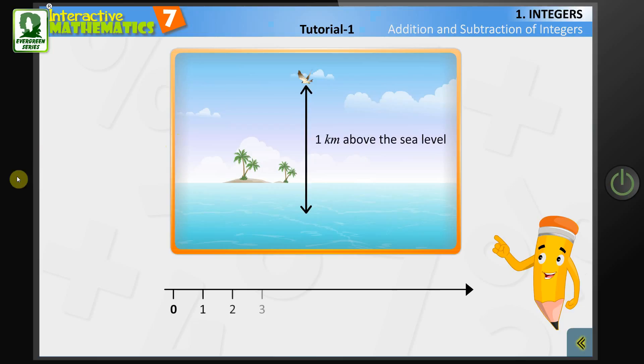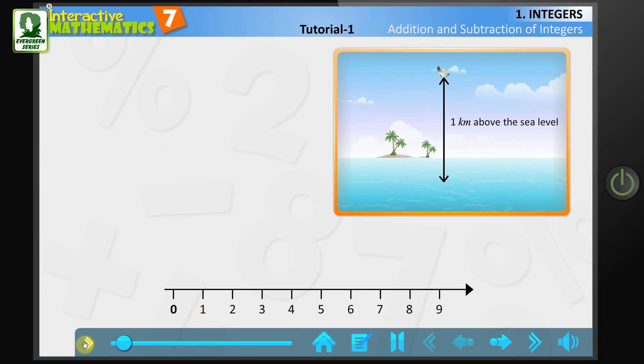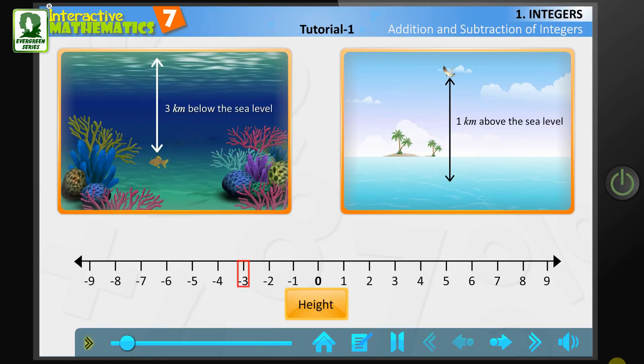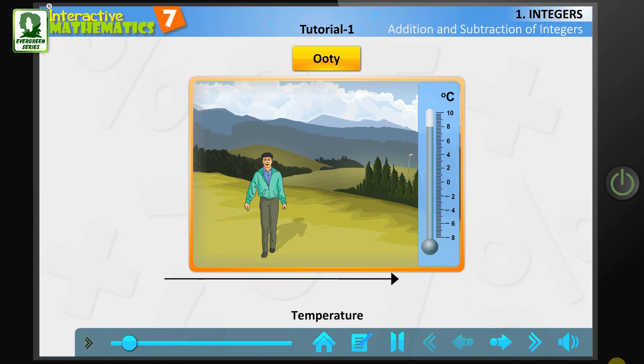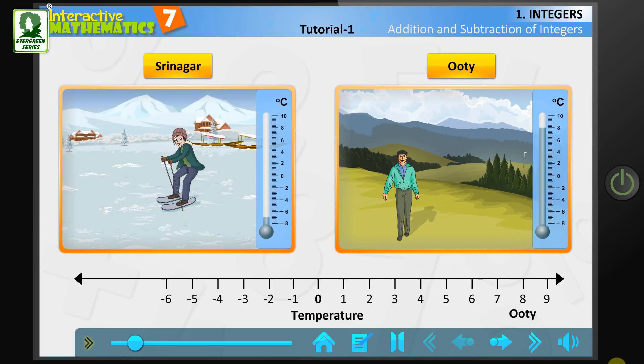You already know, height above sea level is denoted by a positive integer, whereas depth below sea level by a negative integer. Temperature above freezing point is represented by a positive integer and below freezing point by a negative integer.